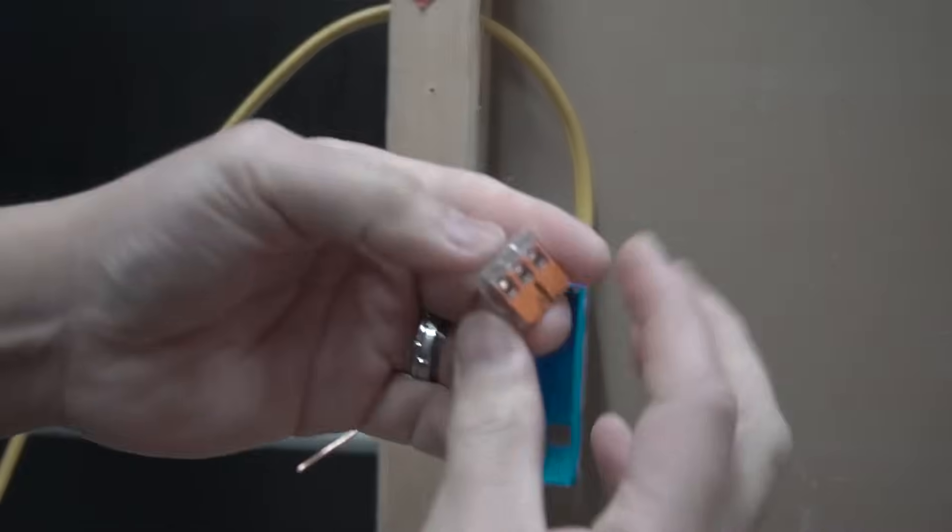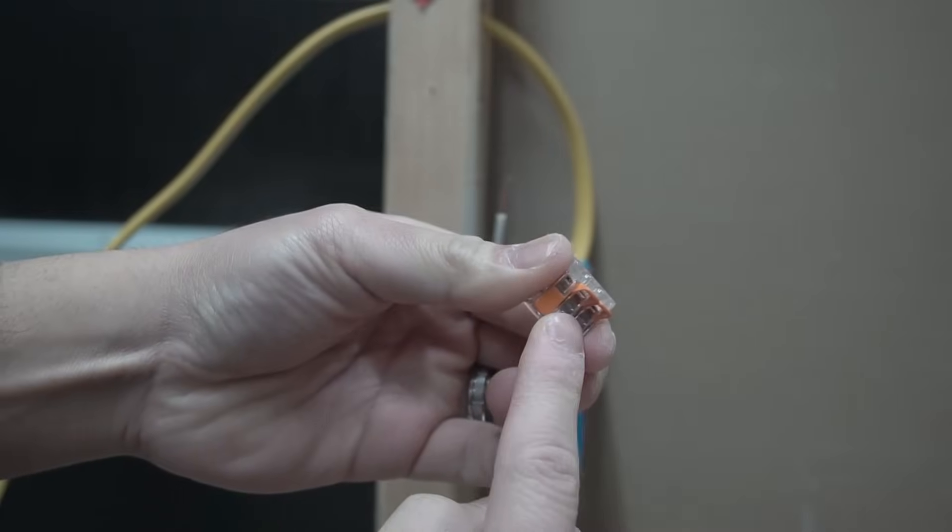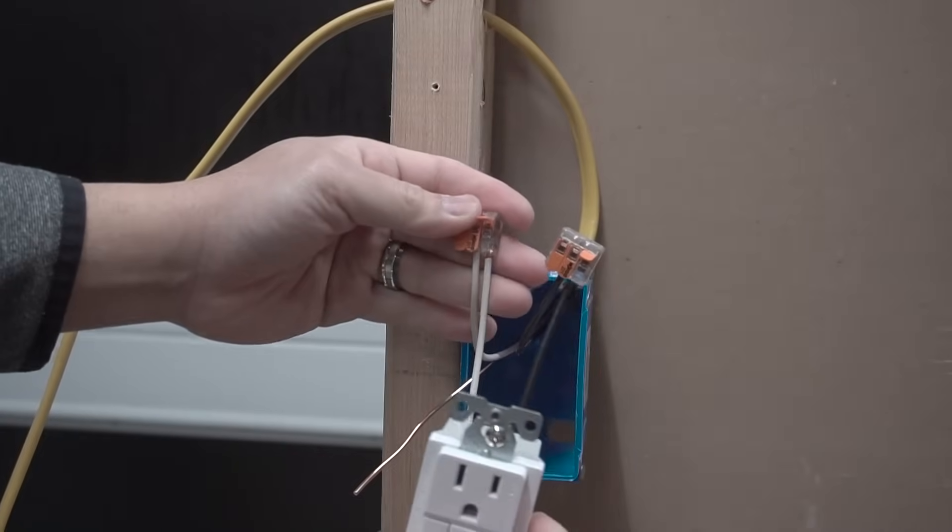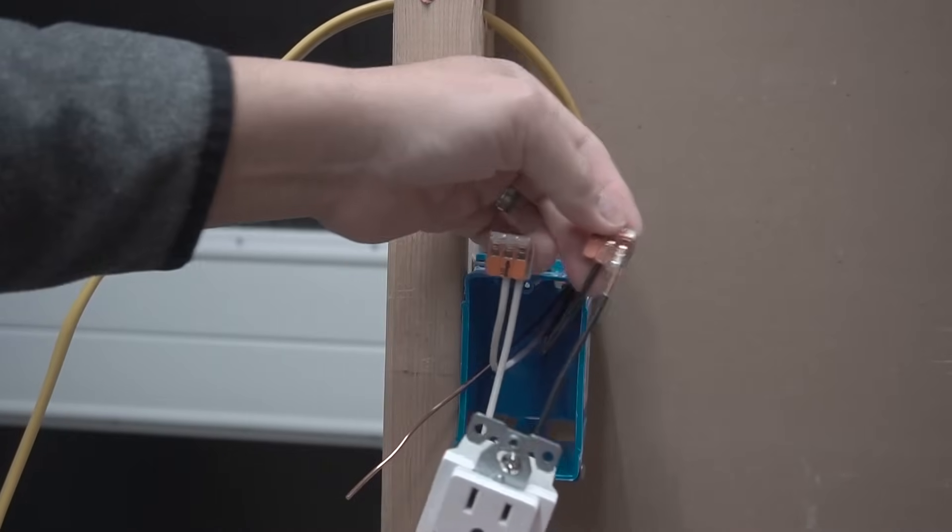We're going to be installing a three-lever 221 WAGO. Okay, so we're going to open up two levers right there and go neutral to neutral and hot to hot.